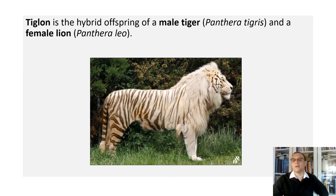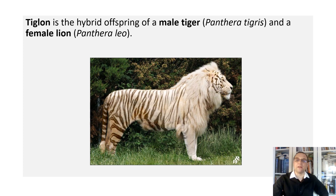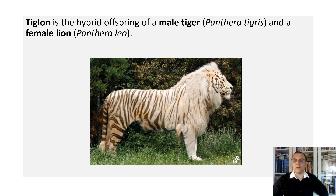A tigon (or tiglon) is the hybrid offspring of a male tiger and a female lion. However, this offspring cannot have offspring — it is not fertile. Why? Because tigers and lions are different species.